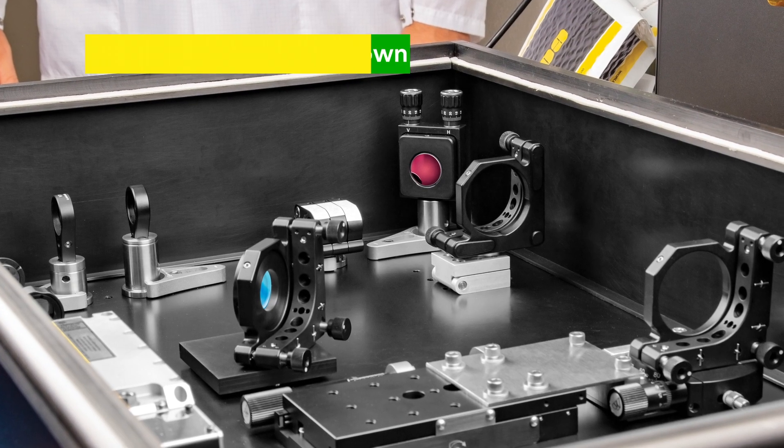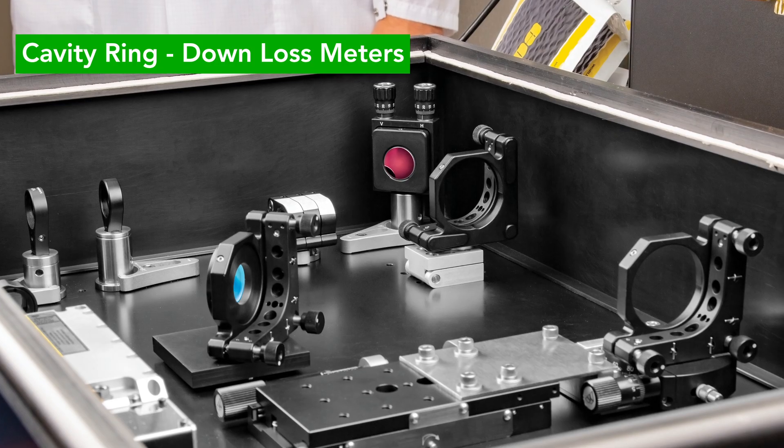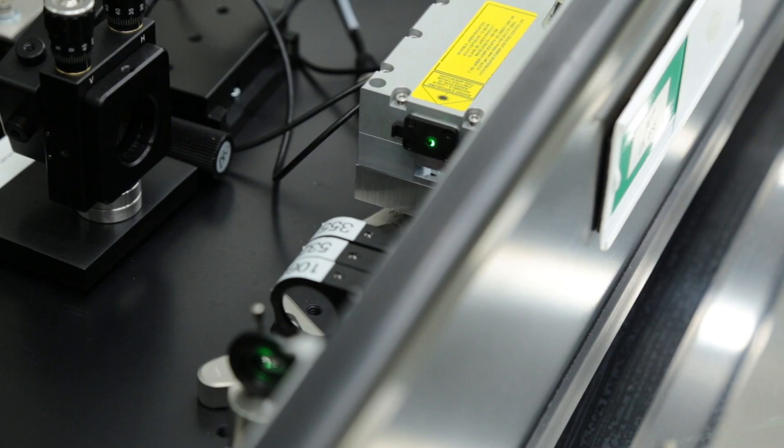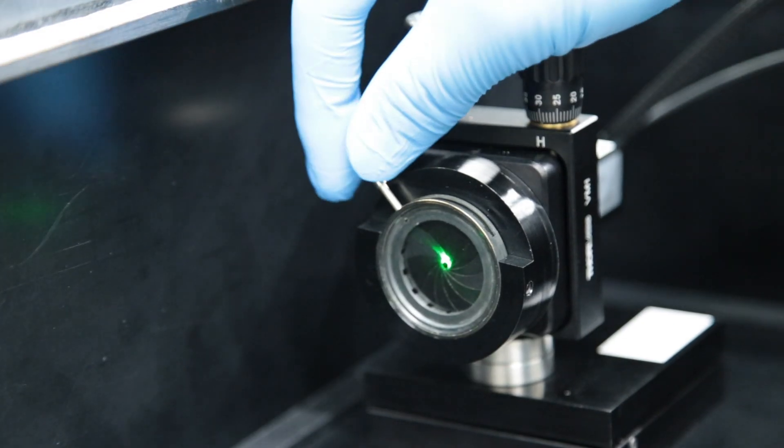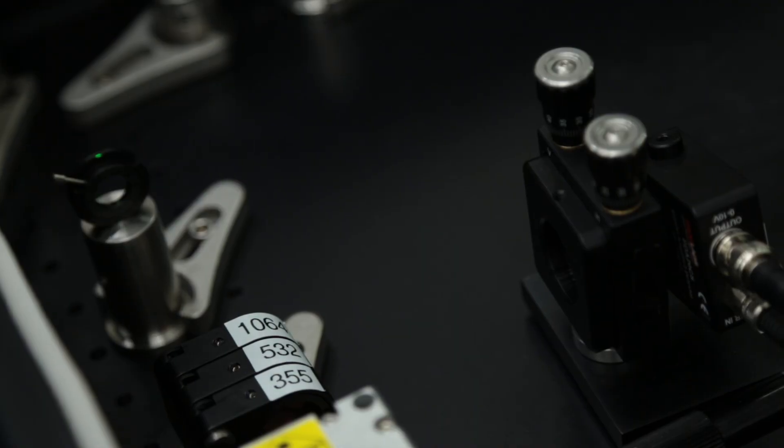For highly reflective or transmissive optics, cavity ring down loss meters provide high-accuracy total loss measurements with sensitivity in the parts per million at specific laser lines.